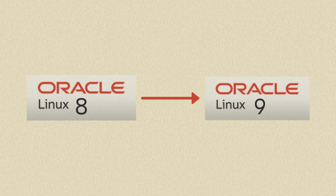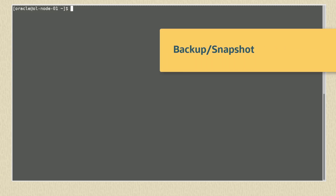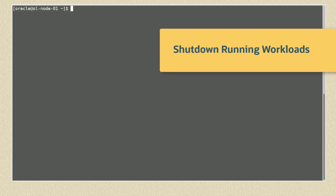Let's look at upgrading our Oracle Linux 8 system to Oracle Linux 9. Before starting the pre-upgrade or upgrade, ensure your system is fully updated and make a backup or snapshot so you can restore if there's any issue with the upgrade. Shut down any running workloads, as the upgrade process will carry out multiple reboots.